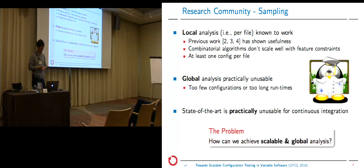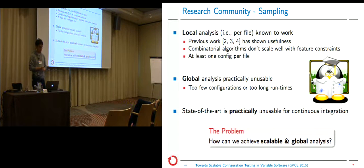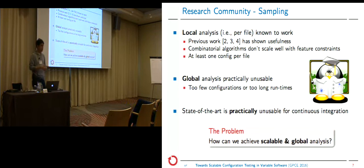The state-of-the-art is not really practical for continuous integration systems, mostly because it takes too long. The problem we wanted to solve is: how can we make sampling global — since we need to build software to test it — and make it scalable at the same time?